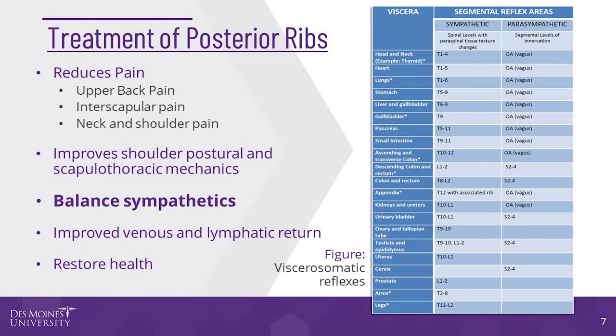Rib dysfunction can be a result of or contribute to aberrant facilitation of the spinal reflexes. Treatment of affected regions can therefore help to balance the neural and autonomic influences of these conditions. The posterior rib HVLA technique is one of the favorite and most requested treatments by both patients and medical students. While an elevated rib strain may also be present, the technique in this video will focus on HVLA to directly address the articular aspects of a posterior rib dysfunction.